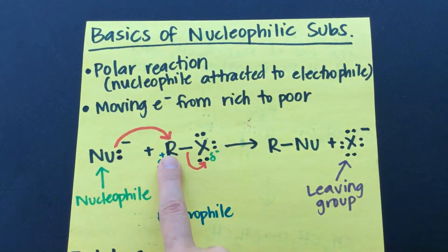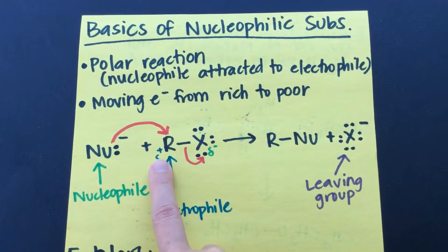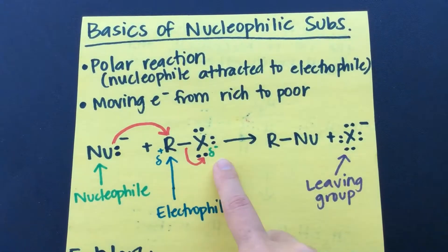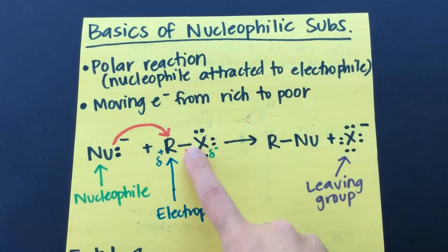And our electrophile is going to be electron poor. So this is an area of the molecule where we've got a partial positive charge, whereas here we've got a partial negative charge.